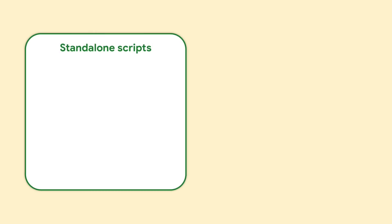Now you have a good overview of how to use standalone and container-bound scripts. But how will you know which type of script to create when you are automating a process or task? Standalone scripts are a good choice for utility scripts — for example, to search your Google Drive for old files whose name contains 'untitled' so that you can delete them. Standalone scripts are often used for creating add-ons.